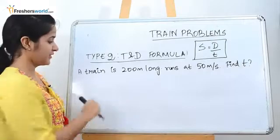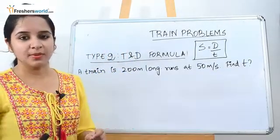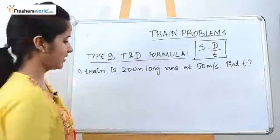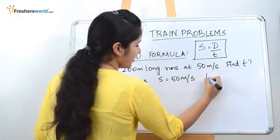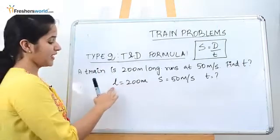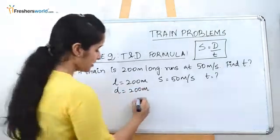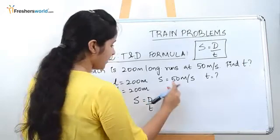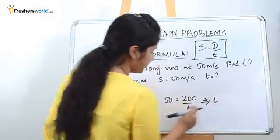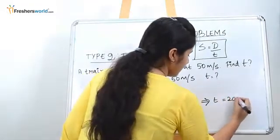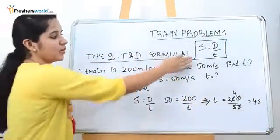The question: a train is 200 meters long and runs at 50 meters per second. Always write the given data so that you don't make a mistake. Length is 200 meters, speed is 50 meters per second, and they are asking for the time. Length is nothing but the distance covered by the train, so d = 200 meters. Speed = distance / time, so 50 = 200 / time. Rearranging: time = 200 / 50 = 4 seconds. Now you can understand the formula much better.